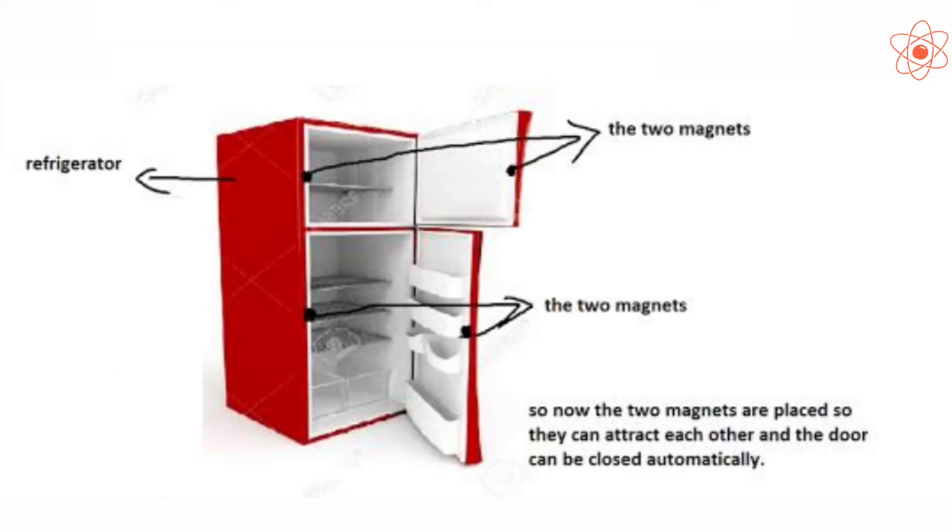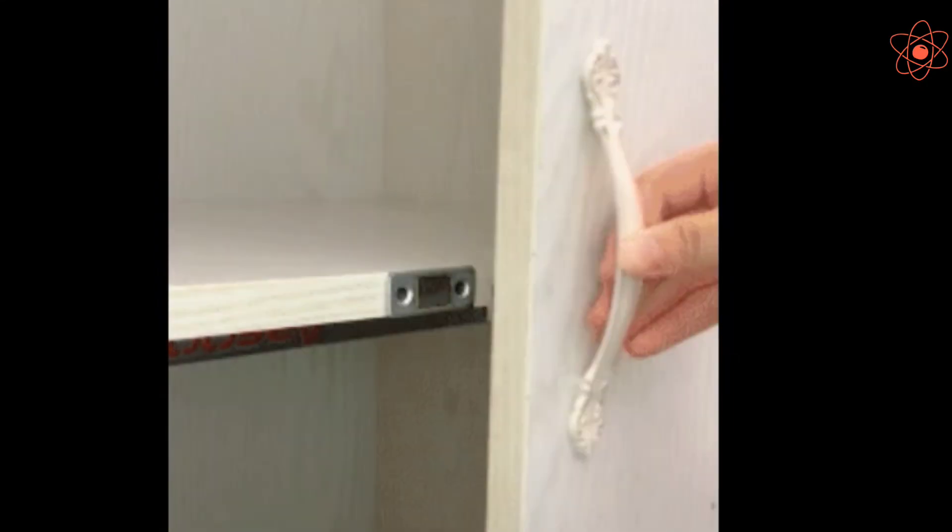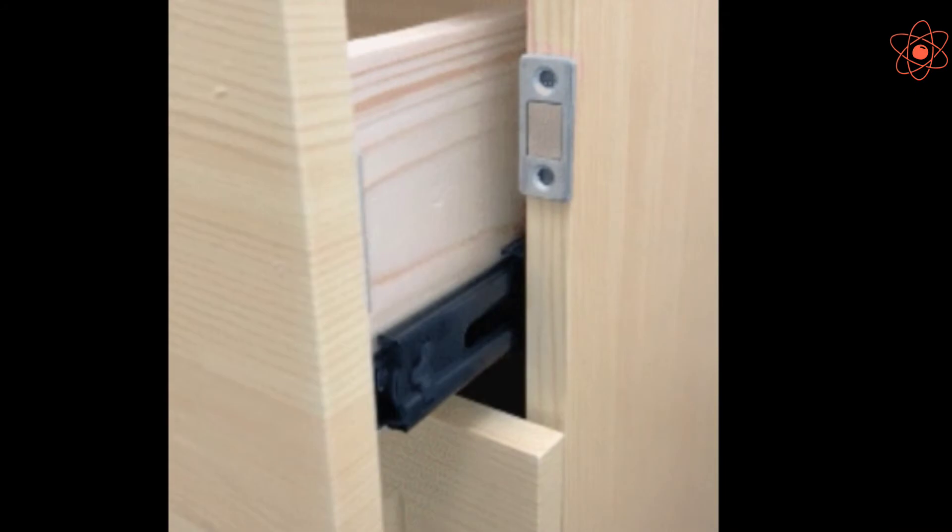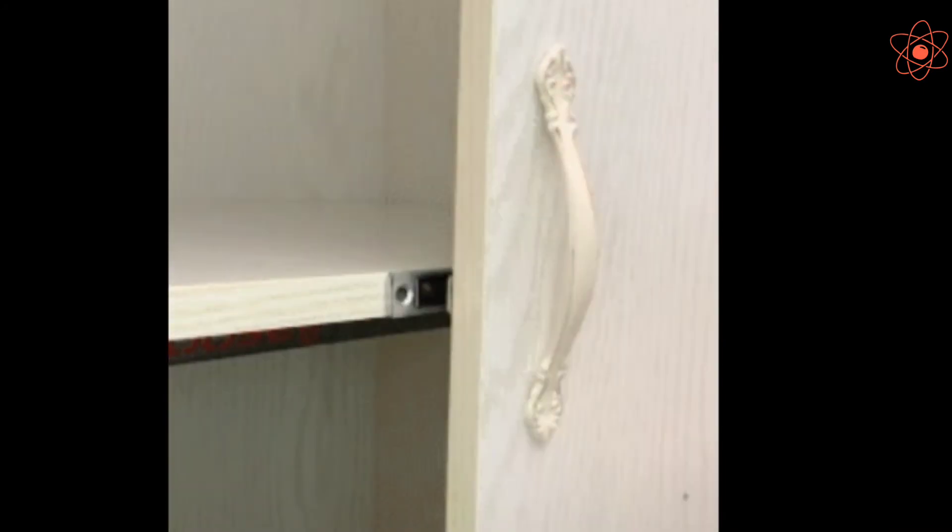It is the magnet on the edges of the refrigerator door that causes it to close automatically. Several cupboards and pencil boxes close with a click because they have magnets that pull to shut.